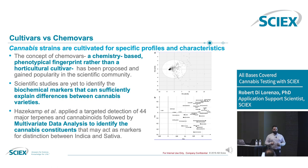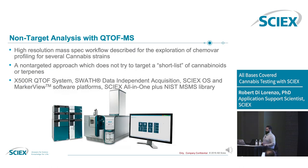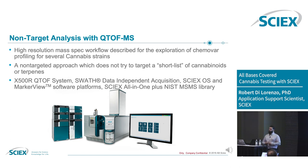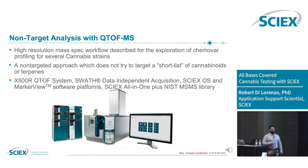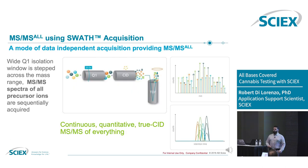That targeted analysis is done using 44 known cannabinoids and terpenes, but we know there are hundreds of cannabinoids and terpenes in cannabis products. So what if we did the same type of work in a non-targeted fashion? Using APCI — because it will ionize endogenous compounds like terpenes and cannabinoids — we can take a non-targeted approach. We used our X500 QTOF system and SWATH data analysis to non-targetedly acquire information across multiple different cannabis strains.